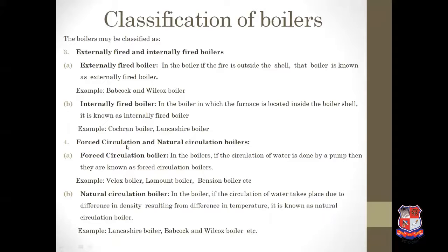Next category is forced circulation and natural circulation boiler. If the circulation of water is done by a pump, it is called a forced circulation boiler. If the circulation of water takes place due to the difference in density resulting from difference in temperature, it is called a natural circulation boiler — examples are Lancashire boiler and Babcock-Wilcox boiler.